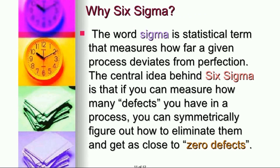Why Six Sigma? The word sigma is a statistical term that measures how far a given process deviates from perfection — from the desired value, similar to standard deviation. The central idea behind Six Sigma is that if you can measure how many defects you have in a process and find the cause of those defects, you can systematically figure out how to eliminate them using lean and total quality management tools, getting close to zero defects. It is impossible to reach zero defects completely, but Six Sigma motivates us to get as close as possible.